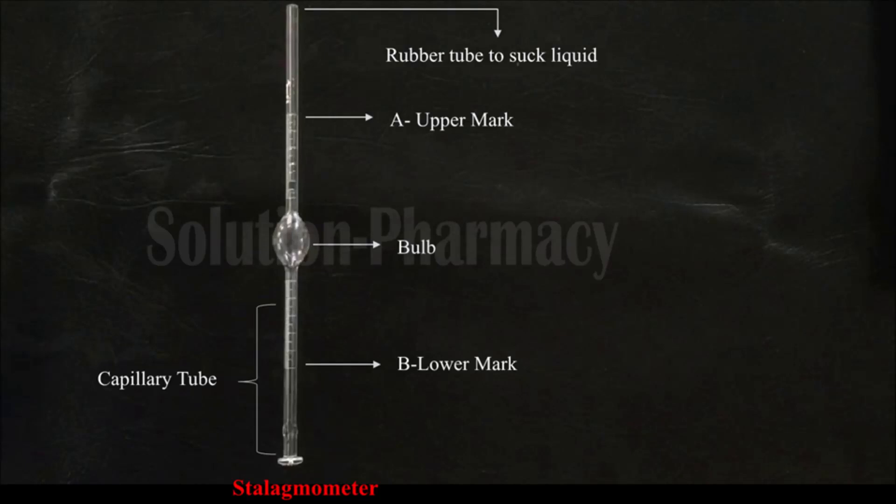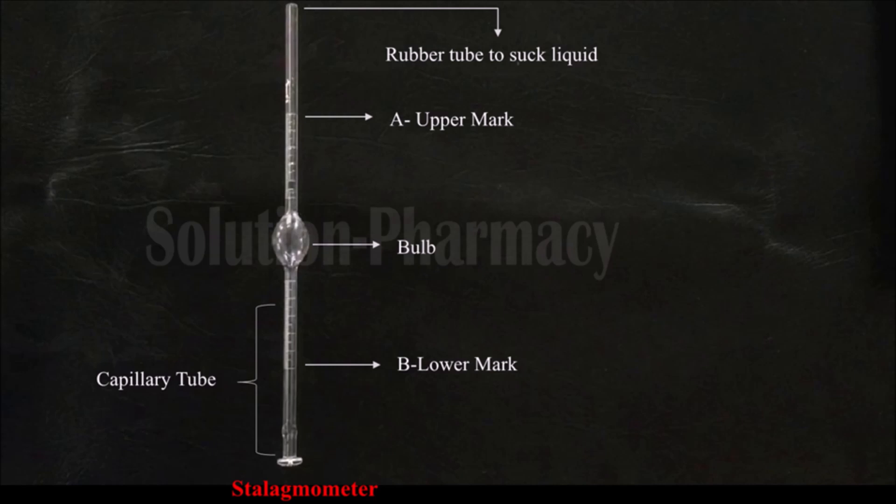Hello friends, welcome to the channel Solution Today. In this video, we will show you the determination method of surface tension of liquid by drop weight method using a stalagmometer, along with calculations. A stalagmometer is an instrument used to determine the surface tension, and we can determine it by two methods using this stalagmometer: the drop count method and the drop weight method.